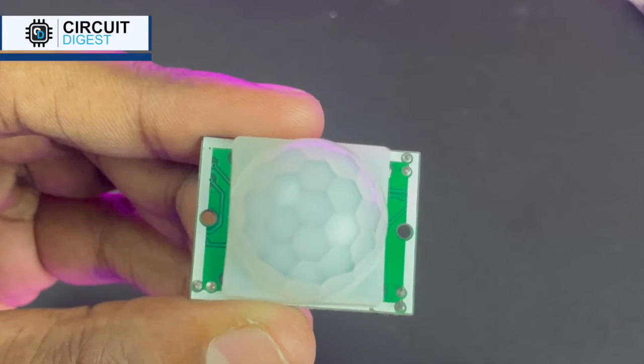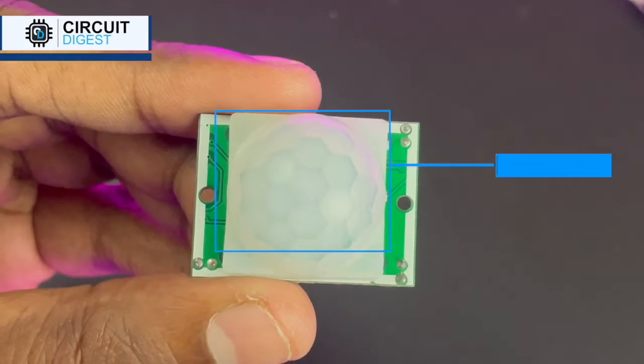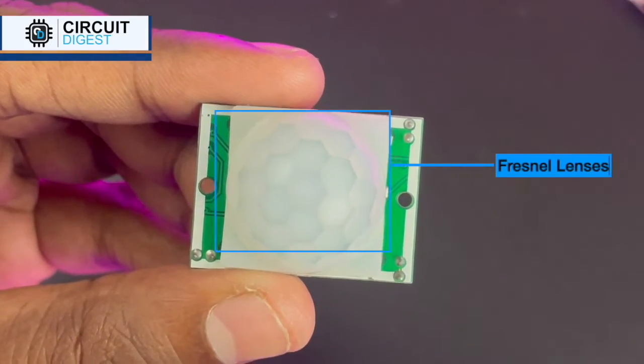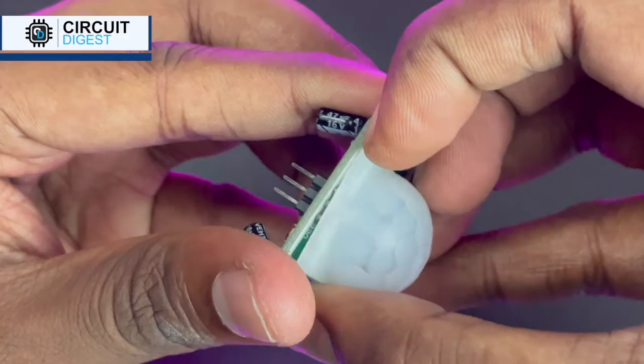Let's check out the different parts of this PIR sensor now. On the top, we have these Fresnel lenses which can widen the range of this sensor. Now, let's open the sensor to see what's inside.